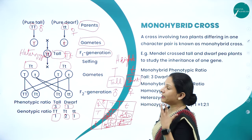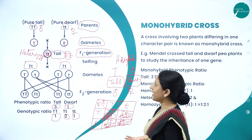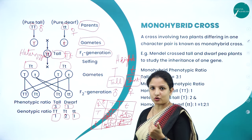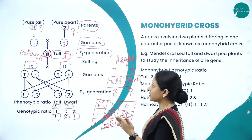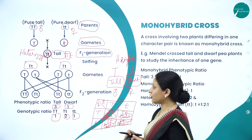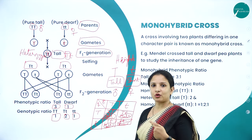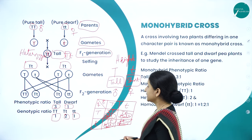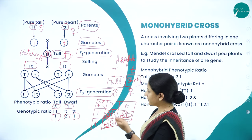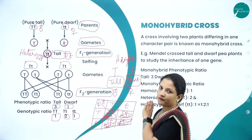So this is what he found out. He took a pure tall plant (male) and a pure dwarf plant (female), crossed them, and got heterozygous tall F1 progenies. He then selfed those F1 heterozygous tall plants — crossing heterozygous tall with heterozygous tall — and got homozygous tall, heterozygous tall, and also dwarf plants in the F2 generation. So in F2, he found both tall and dwarf plants.